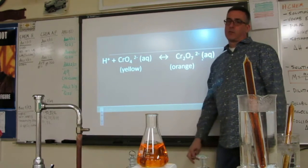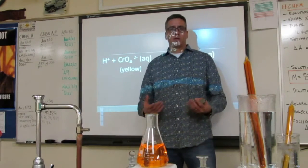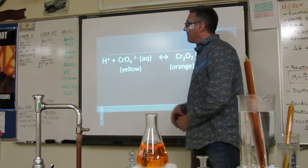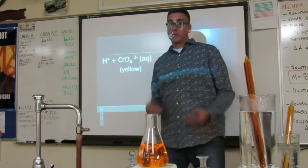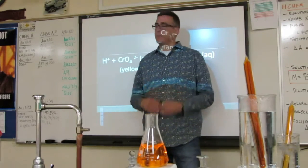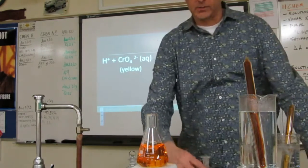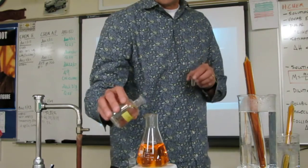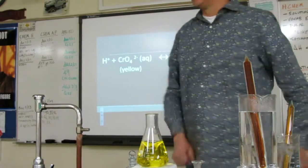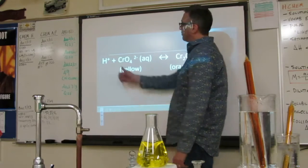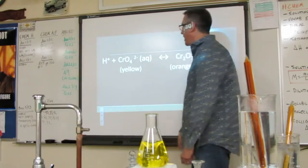What if I remove H⁺? Adding a base — hydroxide — effectively removes protons because OH⁻ reacts with H⁺ to form water. Removing H⁺ shifts the equilibrium left to replace them, and the solution should turn yellow. Adding sodium hydroxide — and sure enough it turns yellow. So adding hydroxide removes H⁺, and the system shifts left to replace them.